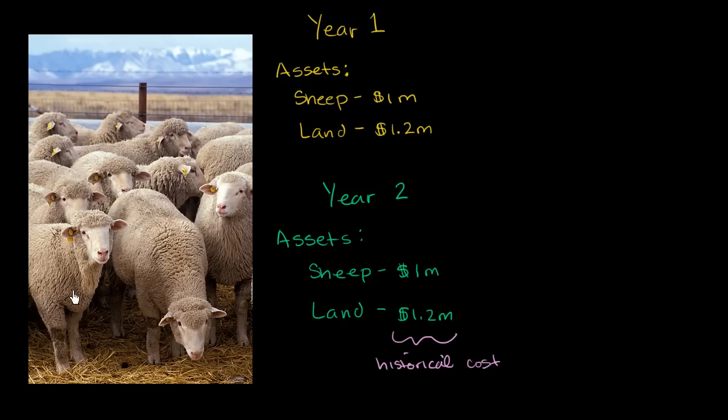They say, I think your sheep are now worth $2 million. So you say, wow, the market value of my sheep is $2 million. Instead of putting $1 million there, let me put $2 million for my sheep. And let's say the land has also appreciated—a highway has gone by and someone wants to build a development nearby. So the fair value of your land has also gone up. Maybe it's also $2 million. So both of these are $2 million.